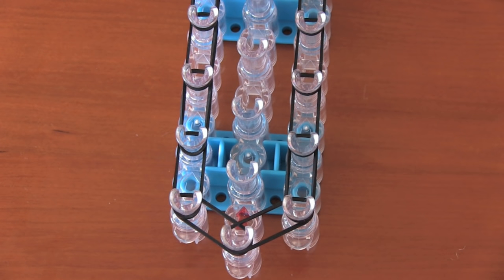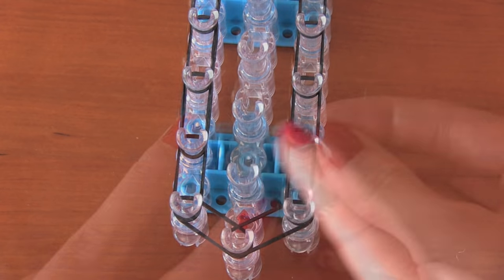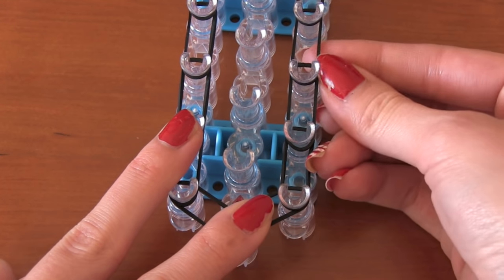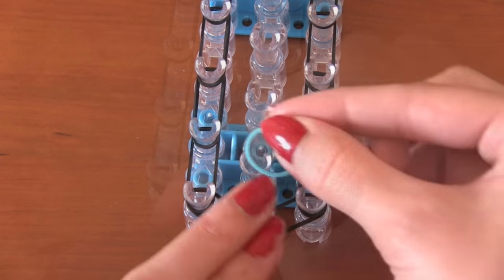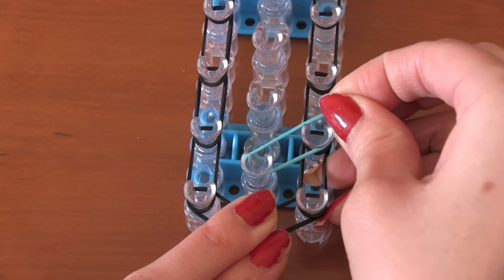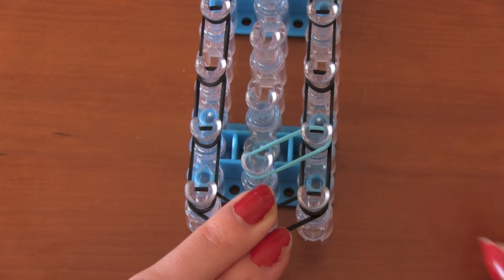Now it's time to start making the stars so they can burst. Before you do this, you might want to push down all of the black bands that you've already placed just to make these next steps easier. Take a band and put it on the second middle peg and over to the right on that upper right peg.